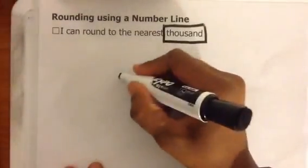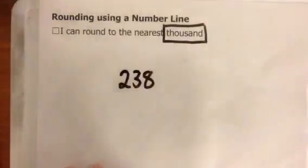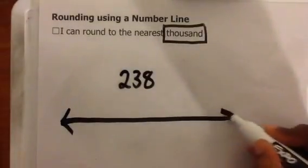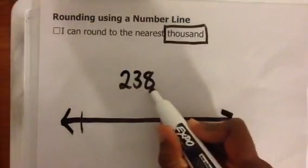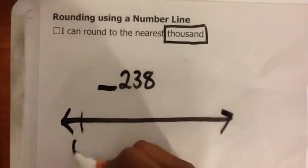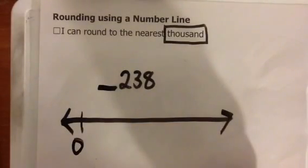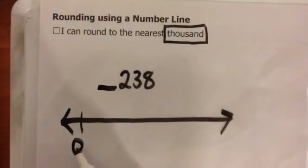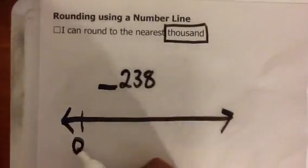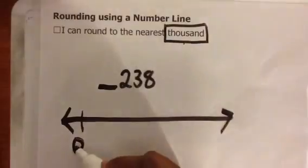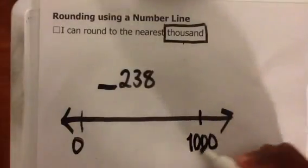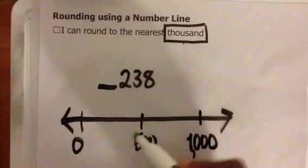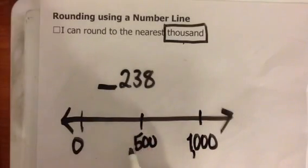Let's round 238 to the nearest thousand using a number line. Ones, tens, hundreds, thousands. There's nothing in my thousands place. Everything to the left would become a zero, but I don't need to write several zeros. I'm rounding to the nearest thousand: zero plus 1,000 is 1,000. Halfway between 0 and 1,000 is 500. Everything to the left gets left — there's nothing there.